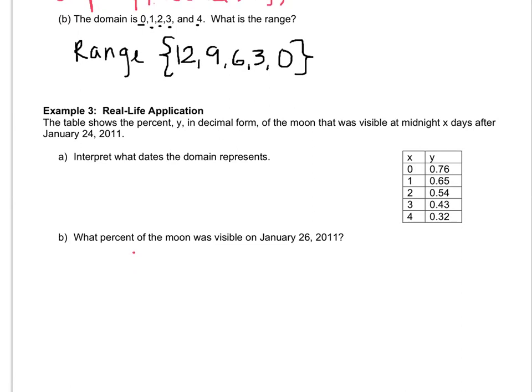The table shows the percent in decimal form of the moon that was visible at midnight x days after January 24th. So y is the percent of the moon and x is the days after January 24th. Interpret what dates the domain represents. So what does 0 represent here? If x is 0, that means 0 days after January 24th. So 0 means January 24th.